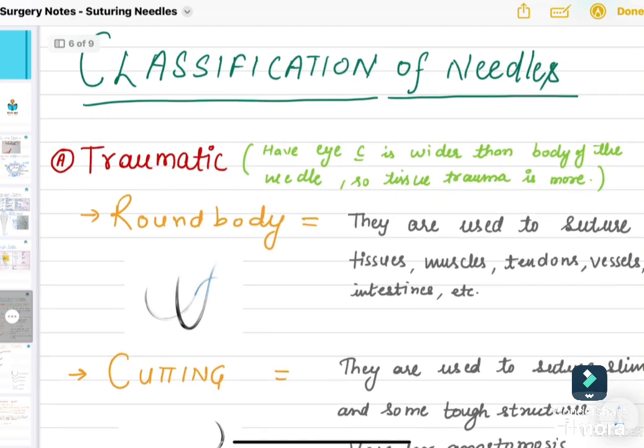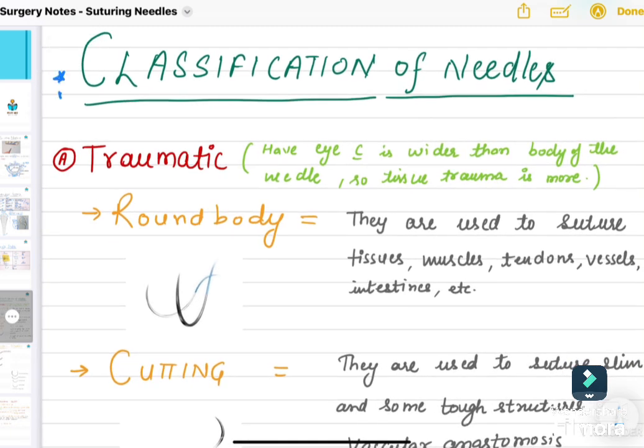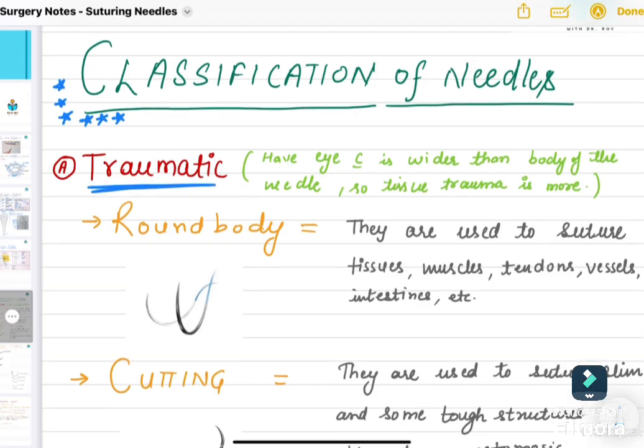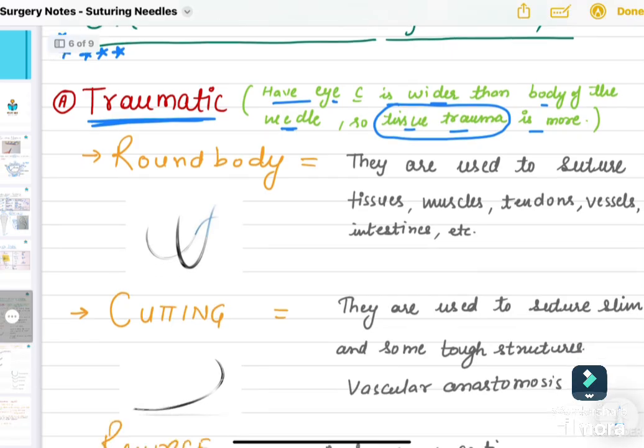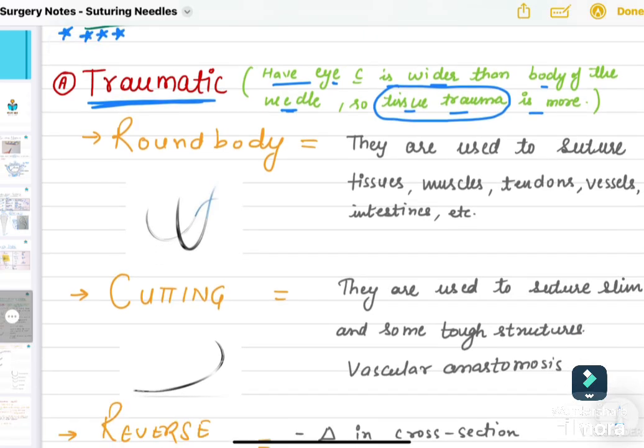Now, classification of needles. There is one more classification which is very important and widely used. The needle when penetrated will definitely cause tissue injury or tissue trauma. We have traumatic needles with three types: first is round body, second is cutting, and third is reverse cutting. We have already seen these.